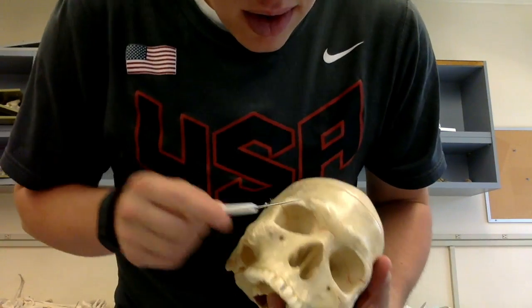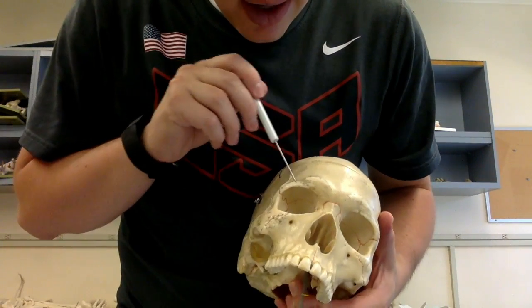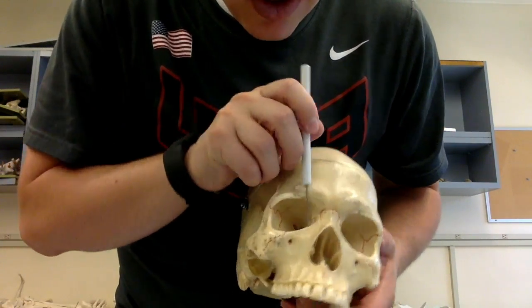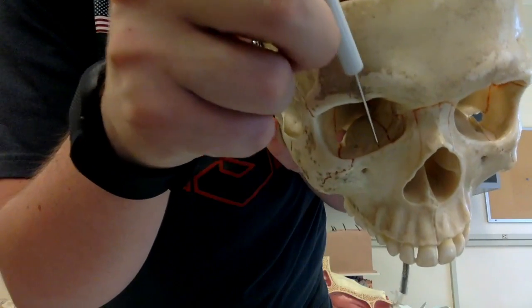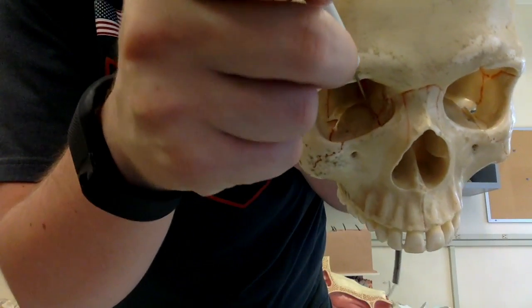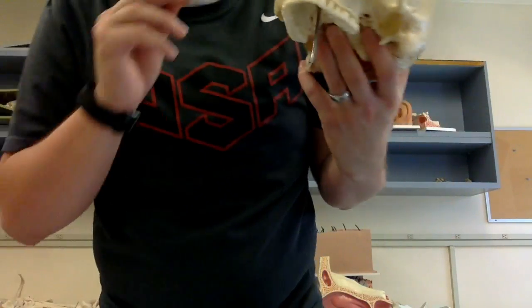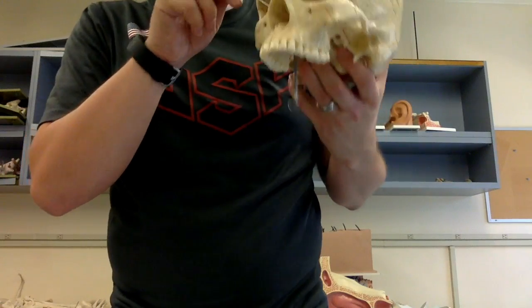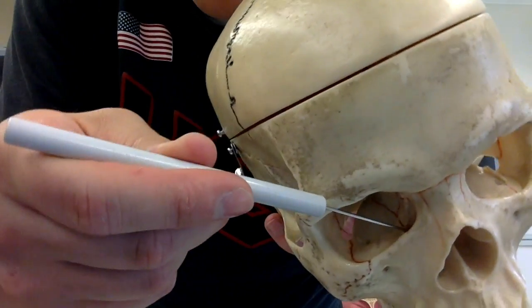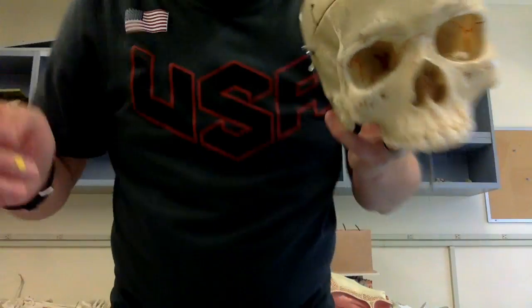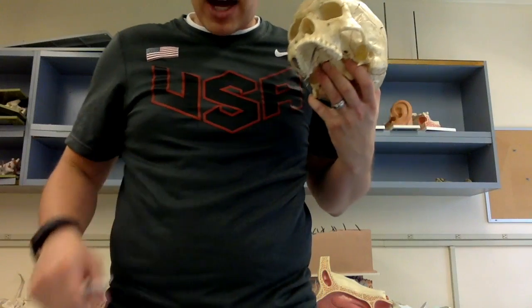Next we have the nasal lacrimal canal. The nasal lacrimal canals reach downward — those are the nasal lacrimal canals reaching down. This here is the nasal lacrimal canal, located within the maxilla.